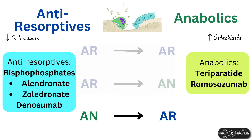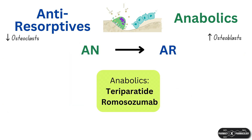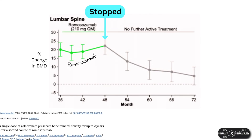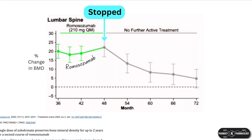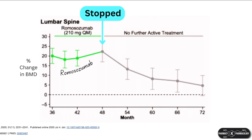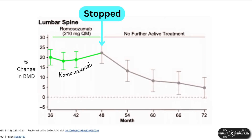Moving on to anabolic-to-anti-resorptive transitions. Anabolics are generally restricted to shorter courses: romosozumab is limited to one year, and teriparatide—though its two-year restriction was recently lifted in the US—will be treated as two years for this video. When anabolics are stopped, BMD gains reverse and return to baseline quite quickly, so it is important to transition to another agent to preserve those gains; otherwise the anabolic therapy will have gone to waste.